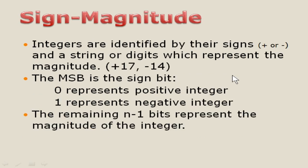First we will go to signed magnitude. Integers are identified by their signs, that is plus or minus. So either it will be a positive number represented with a plus sign, or if it is a negative number, it will be represented as minus, and a string of digits represents the magnitude. For example, plus 17 is a positive integer and minus 14 is a negative integer. So it just represents the sign bit — that is plus or minus — and the magnitude is the rest of the numbers.